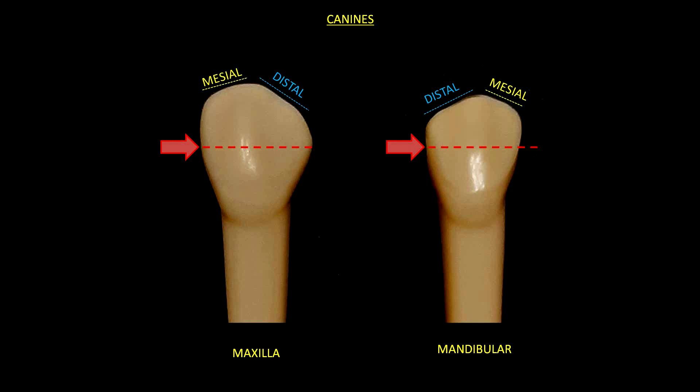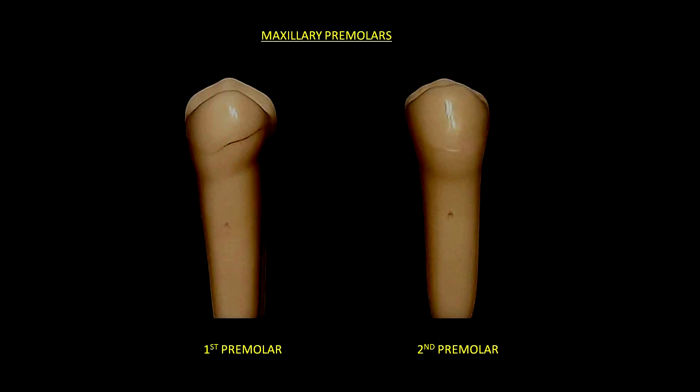Let's continue now with the maxillary premolars. We have the first and the second premolar. If we look at them by the palatal view, we shall see that the first premolar has a lingual cusp which is shorter, and we can see the overlying buccal cusp which is much bigger. If we now compare the lingual view of the first premolar to that of the second premolar, we can observe that the lingual cusp is much bigger.